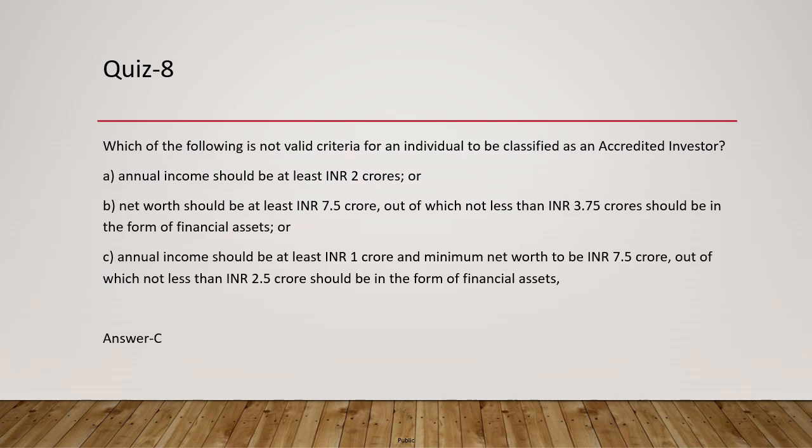Question 8: Which of the following is NOT a valid criteria for an individual to be classified as an accredited investor? The options are: annual income of at least 2 crores; net worth of at least 7.5 crore with 3.75 crore in financial assets; or annual income of at least 1 crore and net worth of 5 crore with not less than 2.5 crore in financial assets. The second option is incorrect — the net worth threshold is 5 crore, not 7.5 crore.